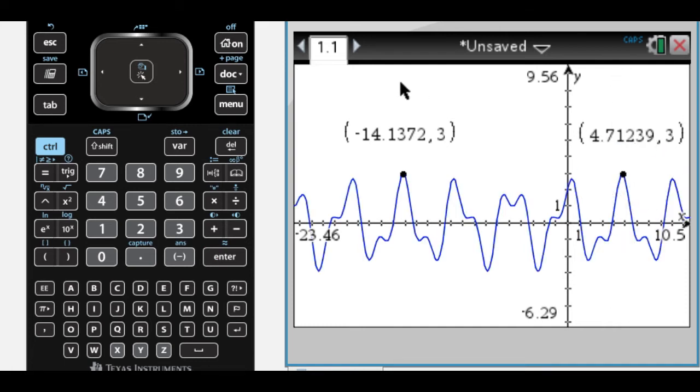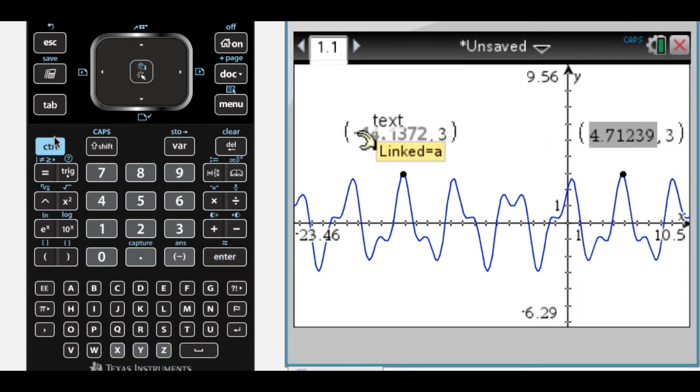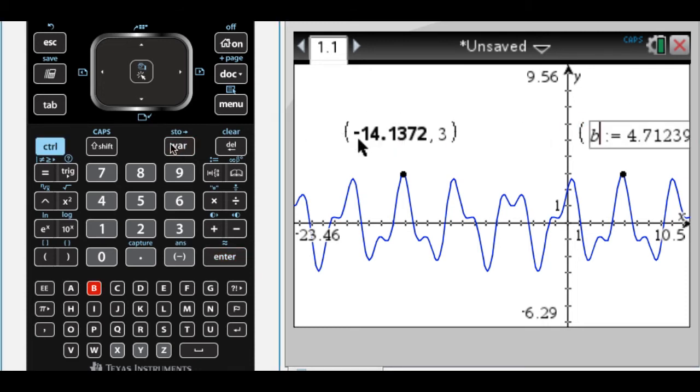And what I want to do is, I want to store these. So I'm going to click on this, and then control and bar, and I'm going to store that as A. And then repeat the process here, and control store, store that as B.